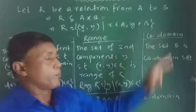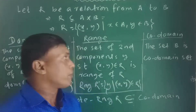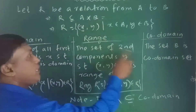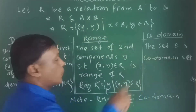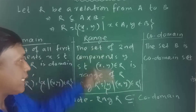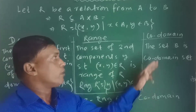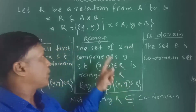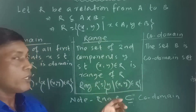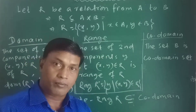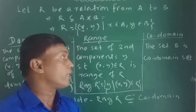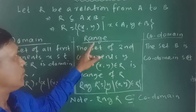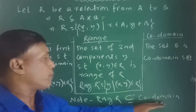The co-domain of a relation R from A to B is the entire set B. So in a relation, the co-domain is the complete set B, whereas the range is some or all elements of B. The range is a subset of the co-domain.